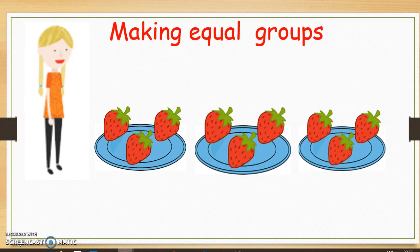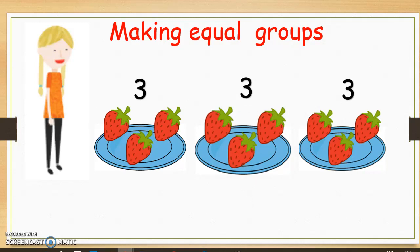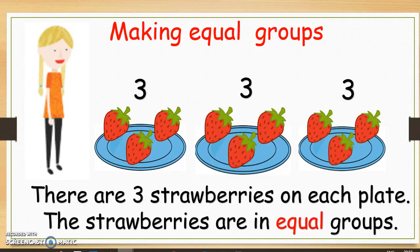First of all we are going to look at making equal groups. Hannah has put some strawberries on plates. Did Hannah make equal groups with the strawberries? Let's have a look. There are three strawberries on the first plate, three strawberries on the second plate, and three strawberries on the third plate. There are three strawberries on each plate, so the strawberries are in equal groups.